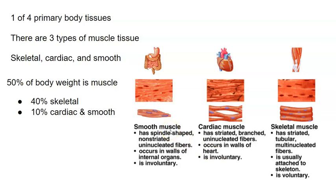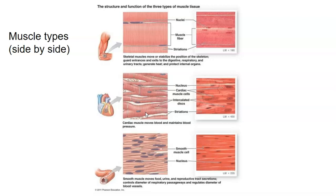Smooth muscle is found in the GI tract, stomach, arteries, and veins. What's most distinctive is that it is not striated — you don't see those banding patterns. Smooth muscle has a single nucleus per cell (uninucleated) and has a spindle shape, coming to a point toward the ends. In summary: skeletal muscle is multinucleated, long, and striated; cardiac muscle is striated with intercalated discs and one nucleus per fiber; smooth muscle has no striations.